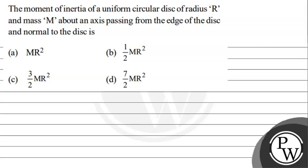The question says that the moment of inertia of a uniform circular disk of radius R and mass M about an axis passing from the edge of the disk and normal to the disk is — options are: MR², ½MR², 3/2 MR², and 7/2 MR².